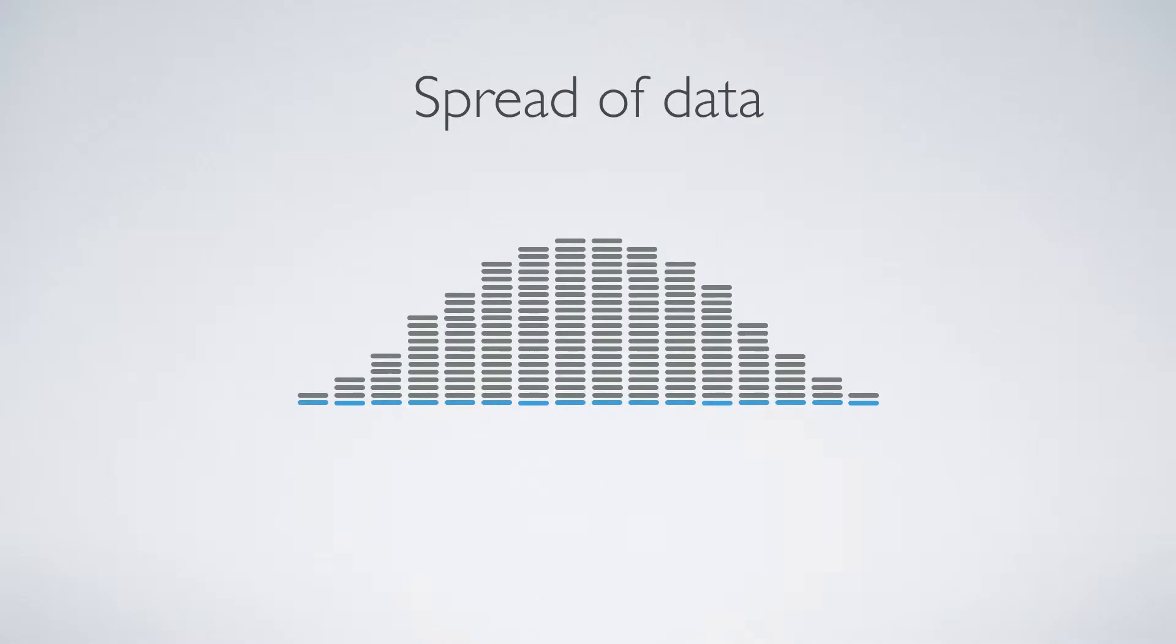And we can see that the further away from the average value that I am, the less likely that occurrence was. The closer I am to the mean, the more likely that occurrence was, the more often it happened.